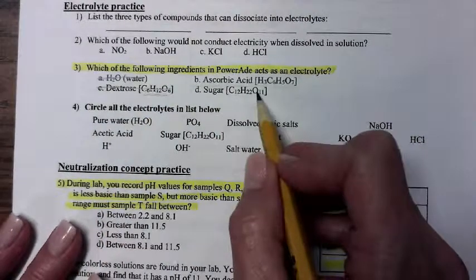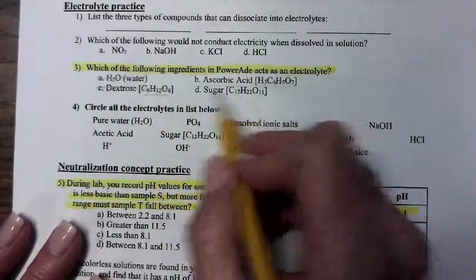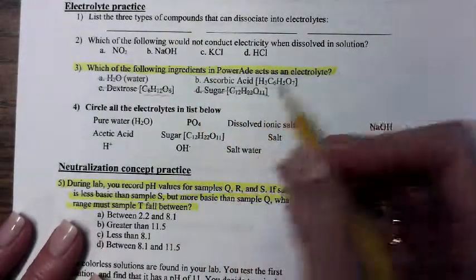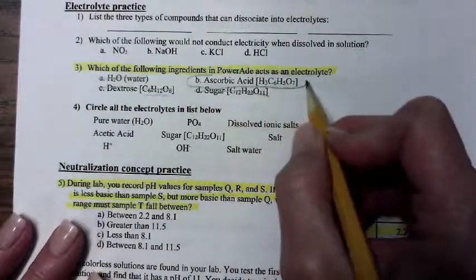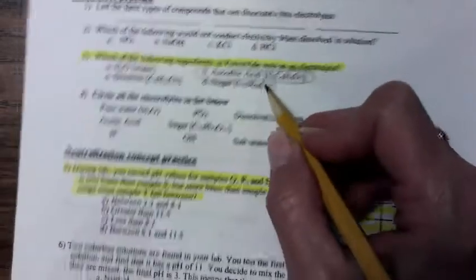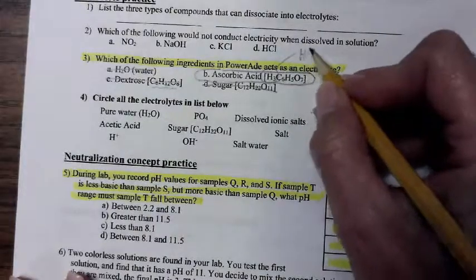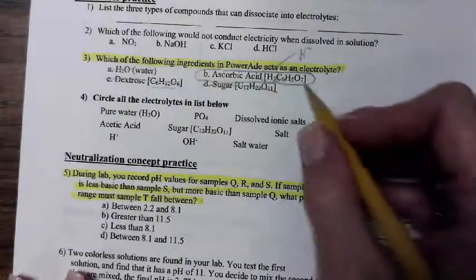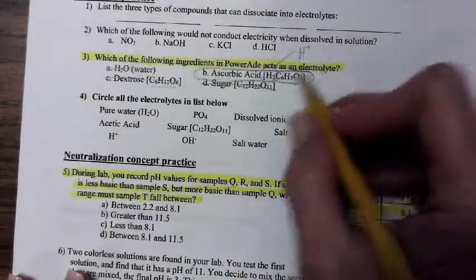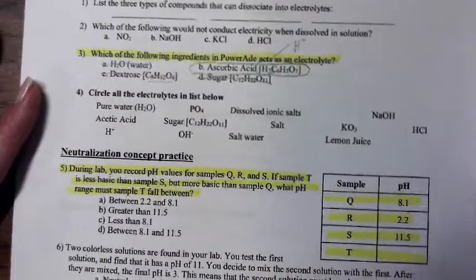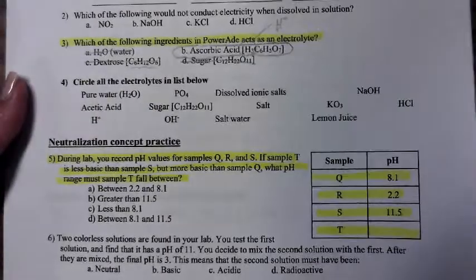Sugar, same thing, same as dextrose. Both of those are covalent compounds, so that's a no. The one that will break apart into electrolytes is the ascorbic acid. That hydrogen in the acid will come off and you'll have H+ ions floating around in there. And those ions that are broken apart will help carry electrical charges and replace electrolytes that you need in your body.